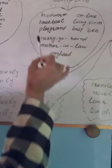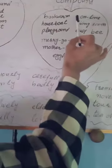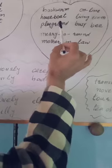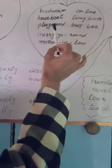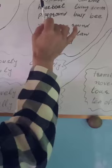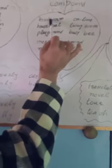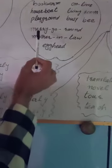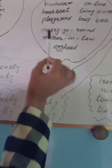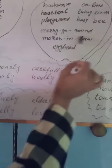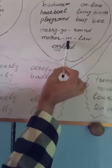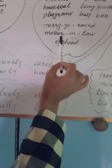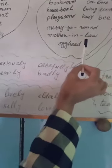Compound words are made up of two or more independent meaningful units which come together to make a new word. They may have more than two constituent words — for example, 'merry-go-round' has three words: merry, go, and round. Similarly, 'mother-in-law' has three words — mother, in, and law — combined to form a compound word.